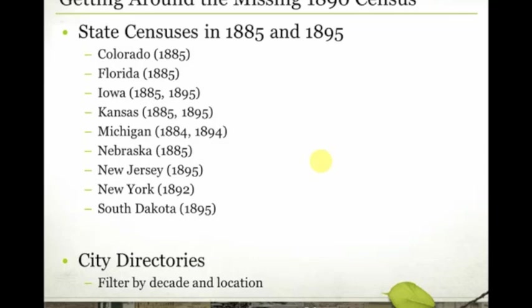State censuses and city directories are probably the two most useful tools for getting around the missing 1890 census. One bonus tip: if you found a family in the 1900 census and you're trying to locate them in the 1880 census but having a hard time, pay close attention to the birthplaces of the children in the household. Sometimes families moved, so they're not in the same place in 1880. If you track the birthplaces and years of those children, you'll often find that they moved — say, from Ohio into Pennsylvania and then into West Virginia. Making a simple timeline of the birth of the children and construction of the family will help you track those movements.